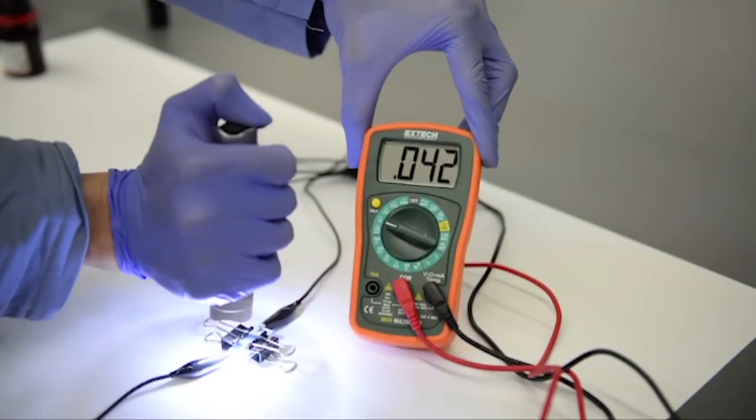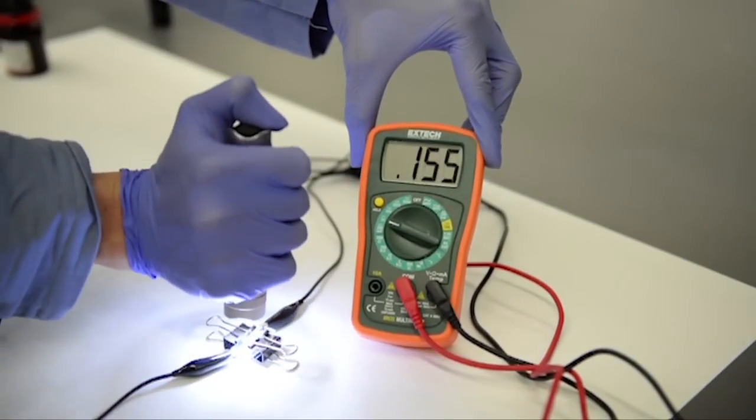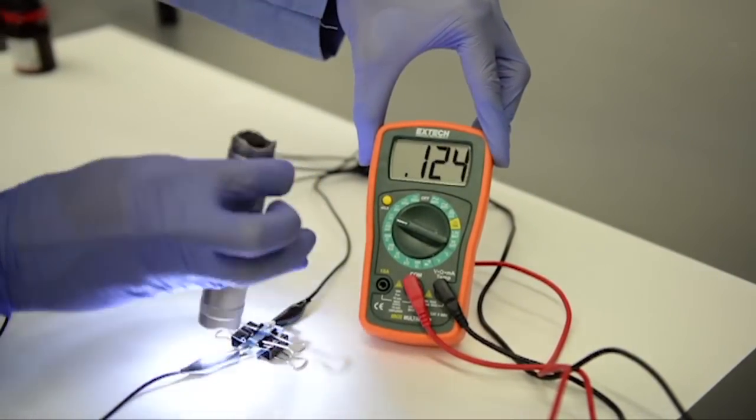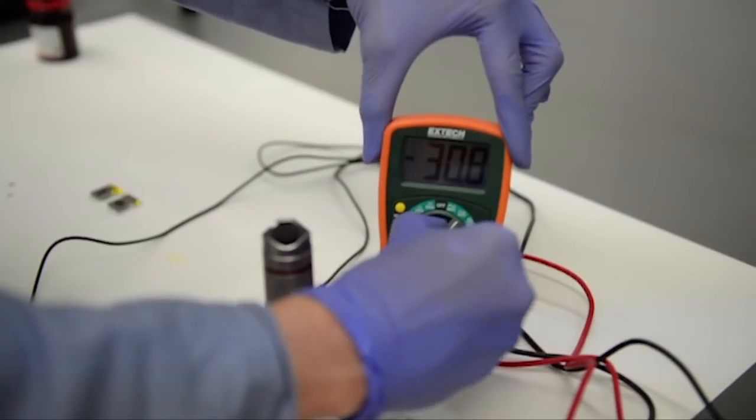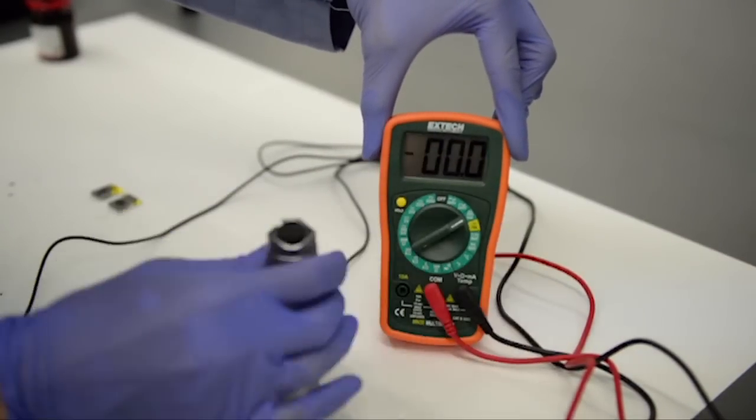We measure voltage by turning the multimeter knob to the 2-volt mark. We measure current by turning the knob to the 1-milliamp mark.